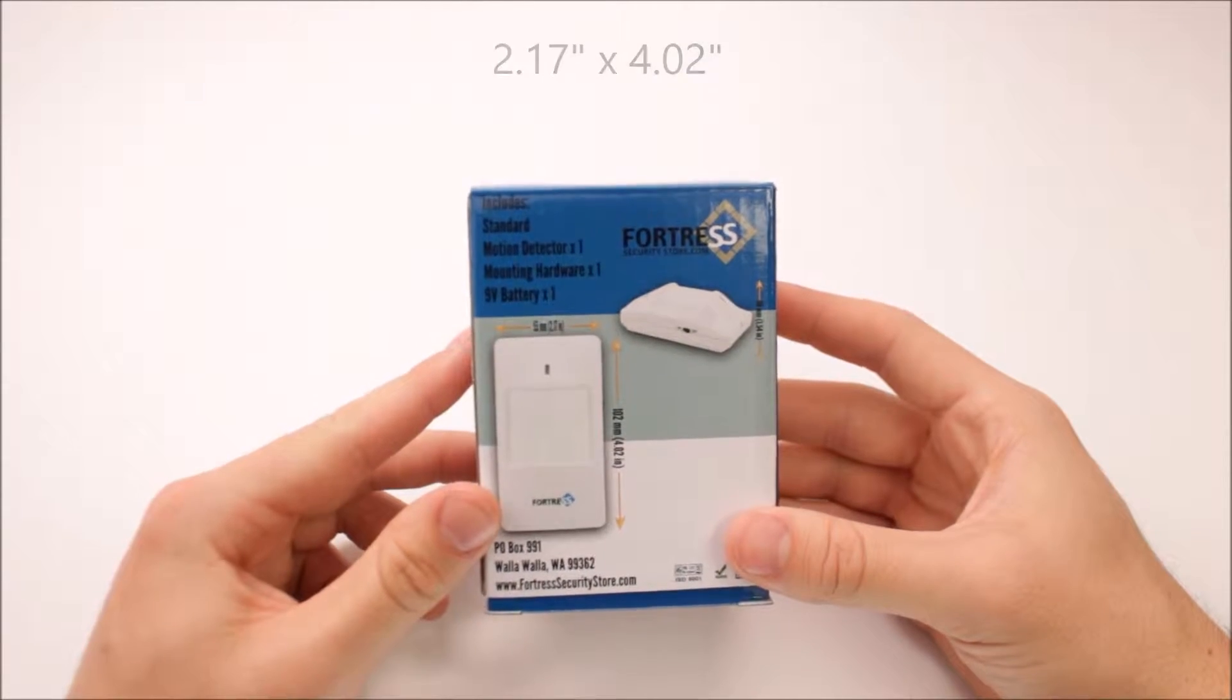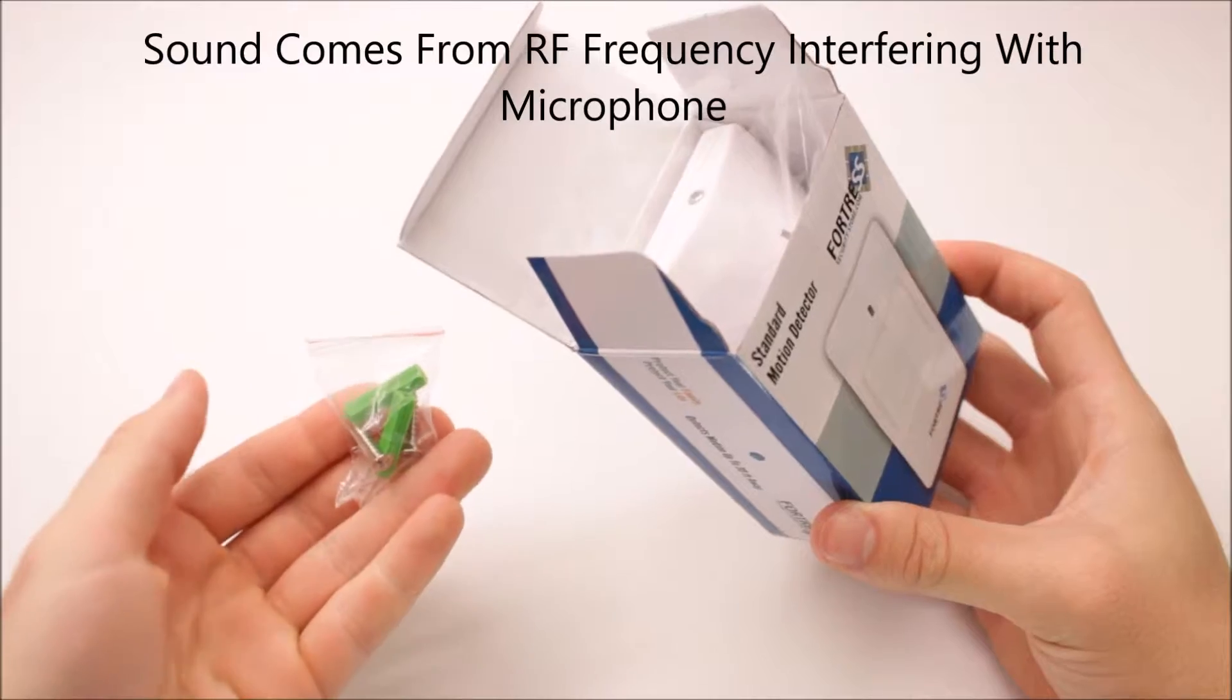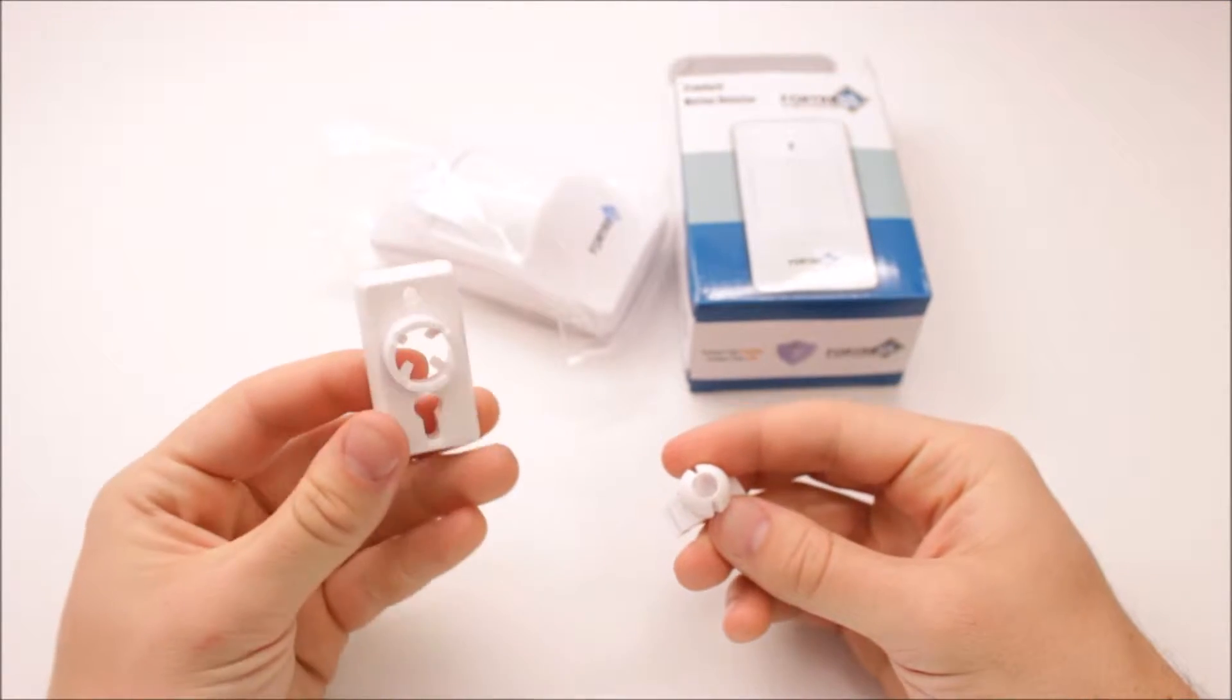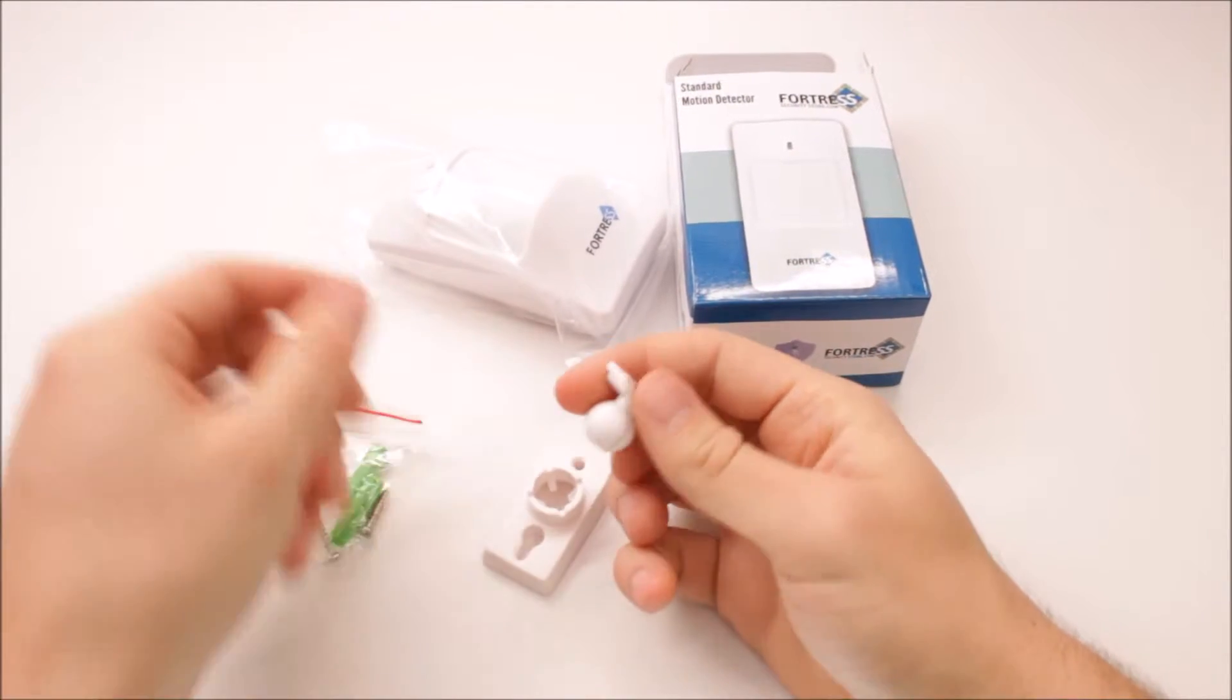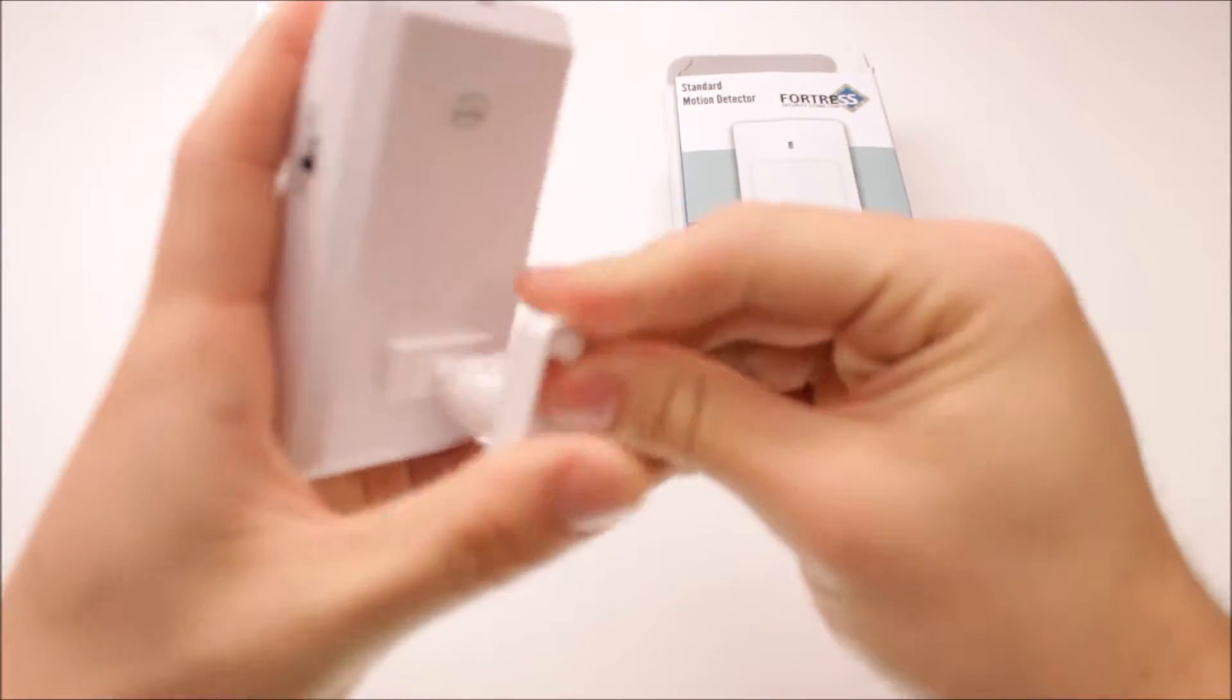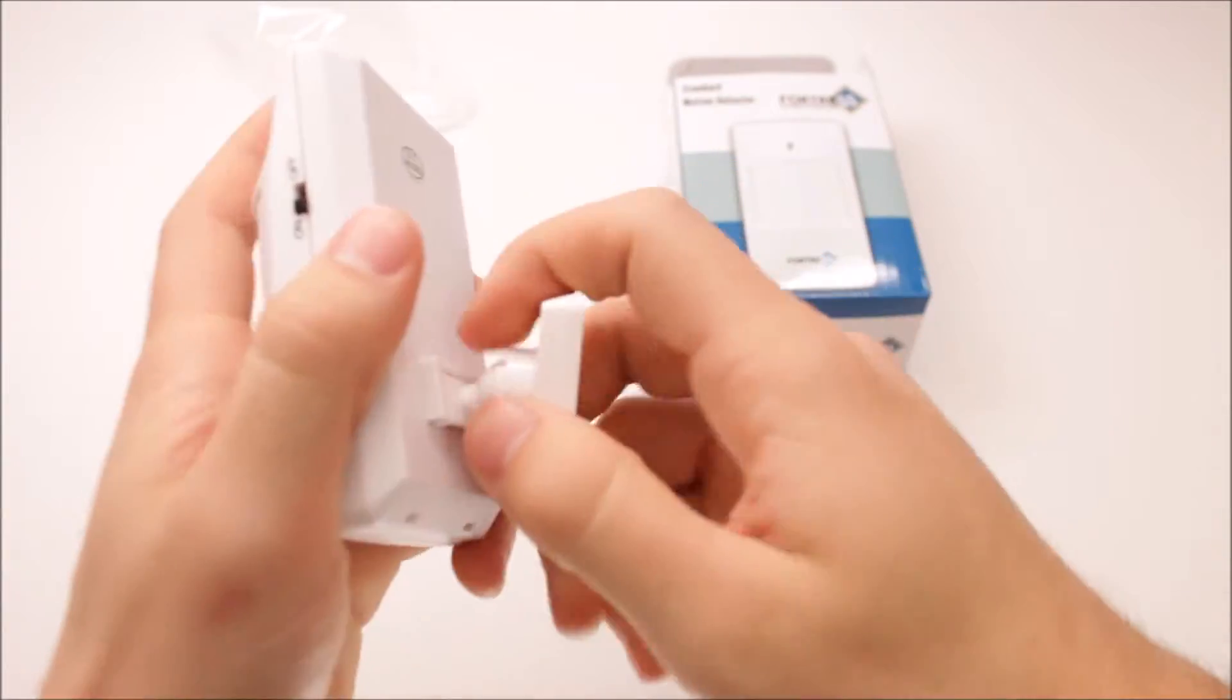Let's go inside the box here. Of course, you get your motion detector, a packet of screws, and mounting hardware. This mounting hardware, the piece in my left hand here, gets screwed to the wall. This piece will snap into the back of the motion detector right here. Once this is mounted on the wall, it will pop on right here, and that enables you to pivot it around while it's mounted on the wall to get the best angle for you.